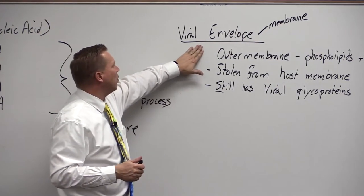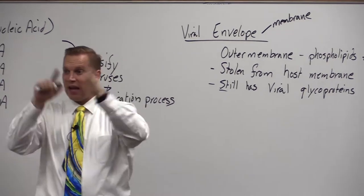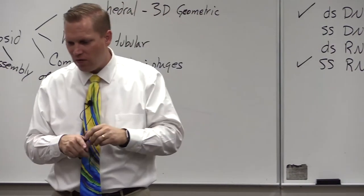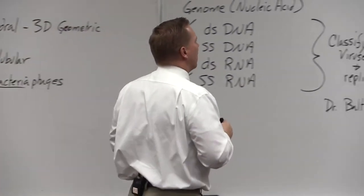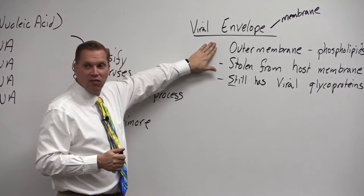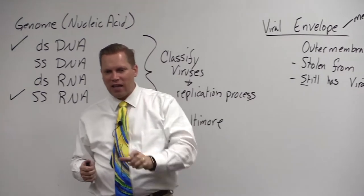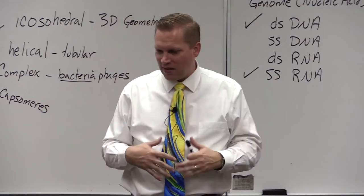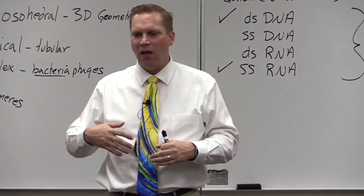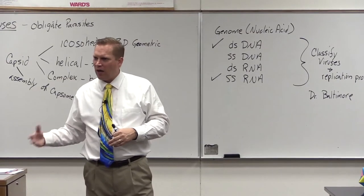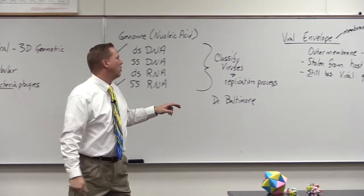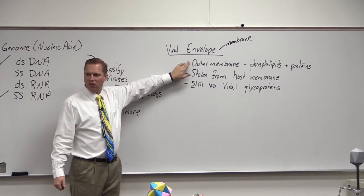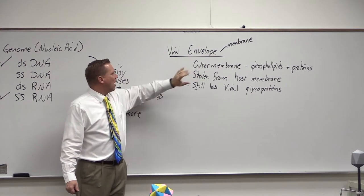Another interesting feature: even though the viral envelope protects it inside a host organism, we find that viruses that have an envelope tend to be less hardy outside of the body. Even though it helps them inside the host body, envelope viruses are a little bit weaker outside the host body, probably because that envelope is susceptible to drying out and other environmental conditions. So it breaks down easily outside the host.